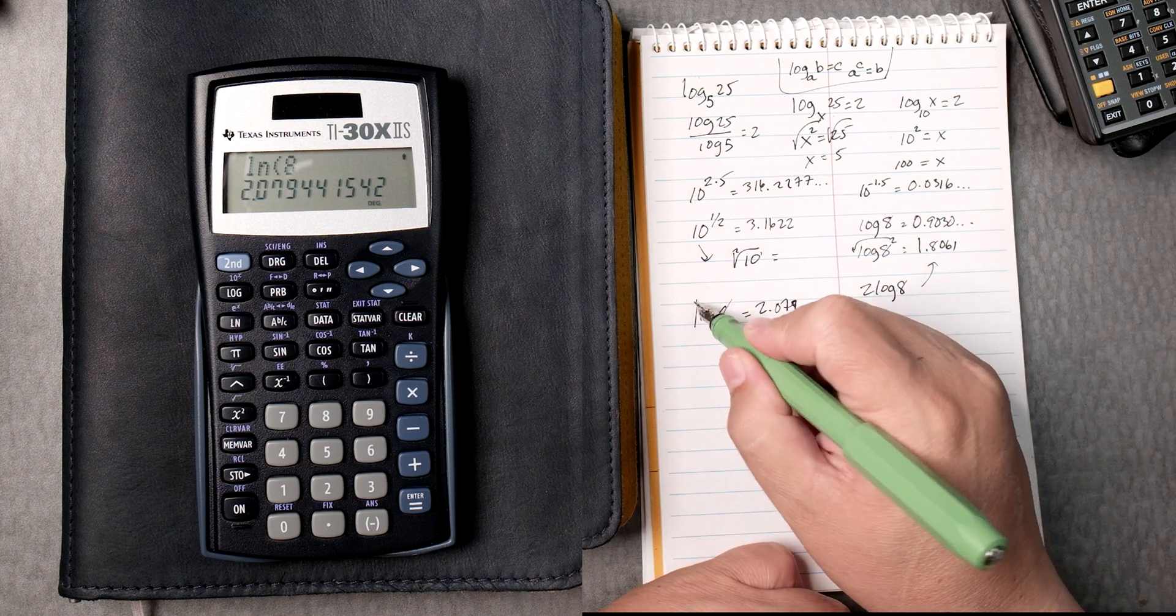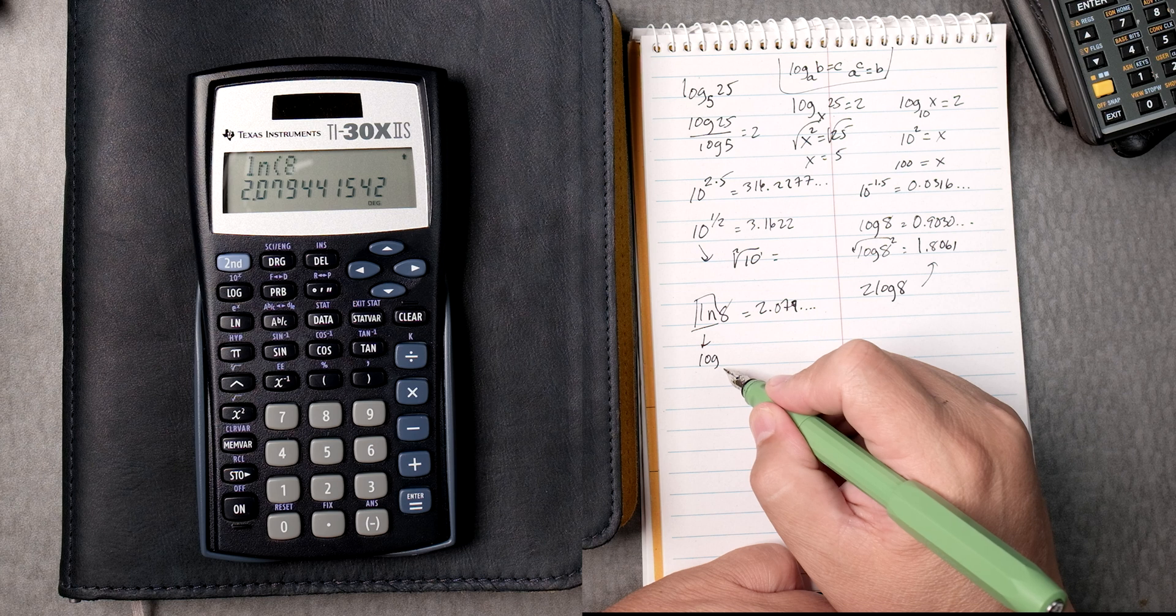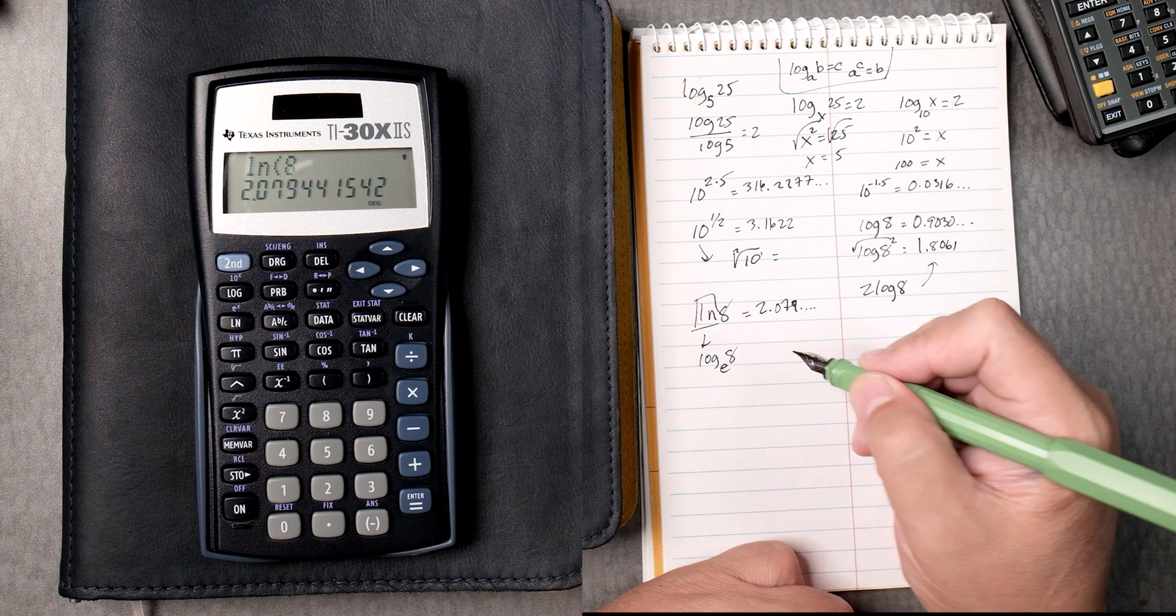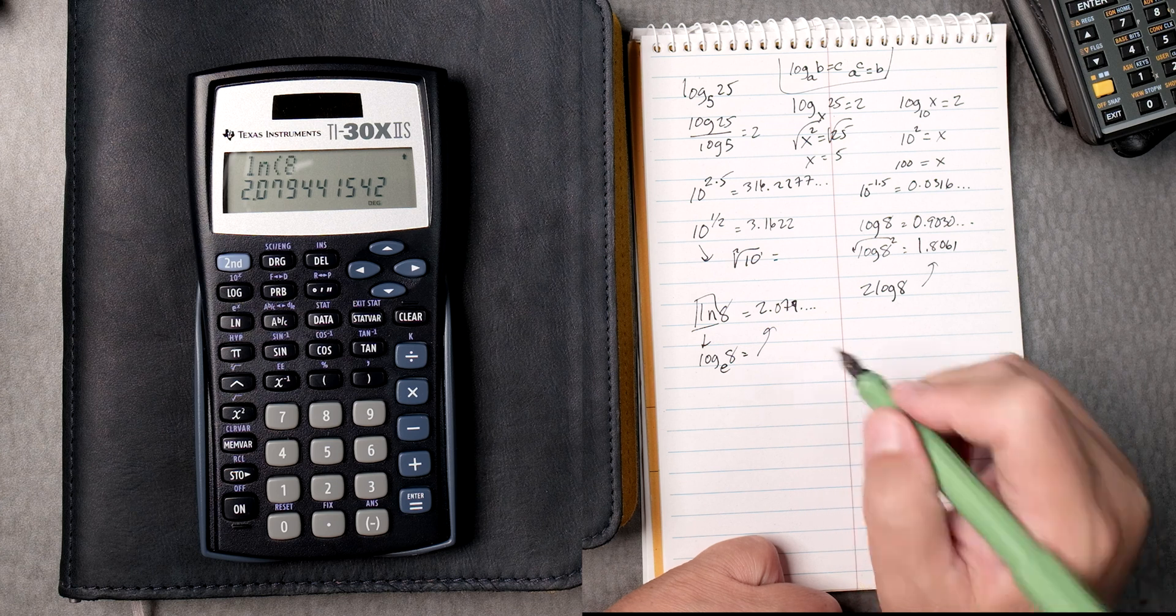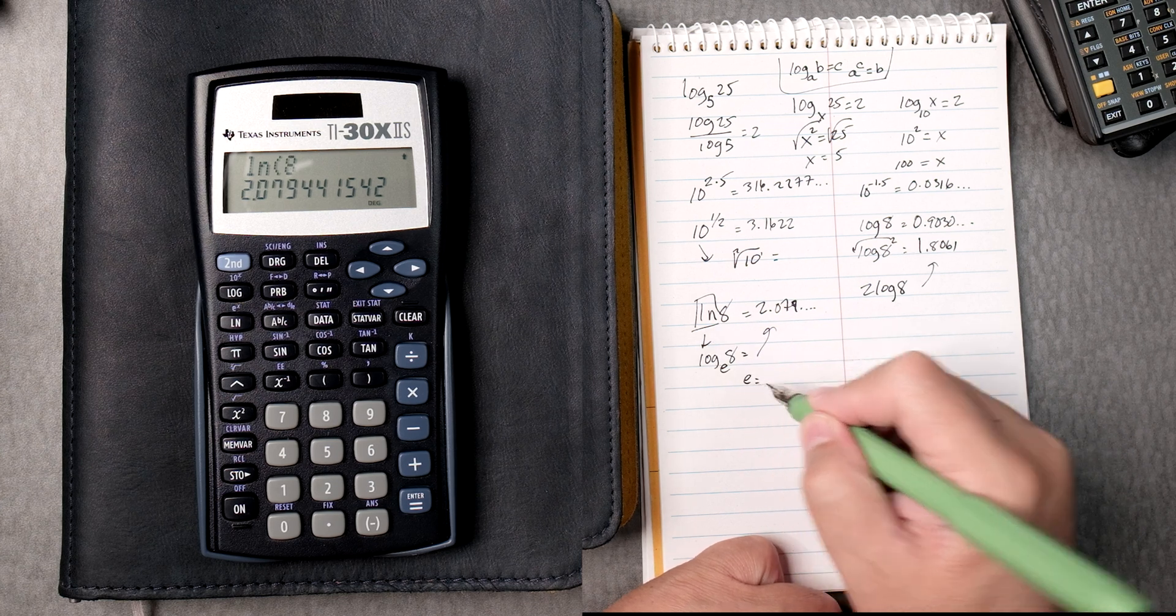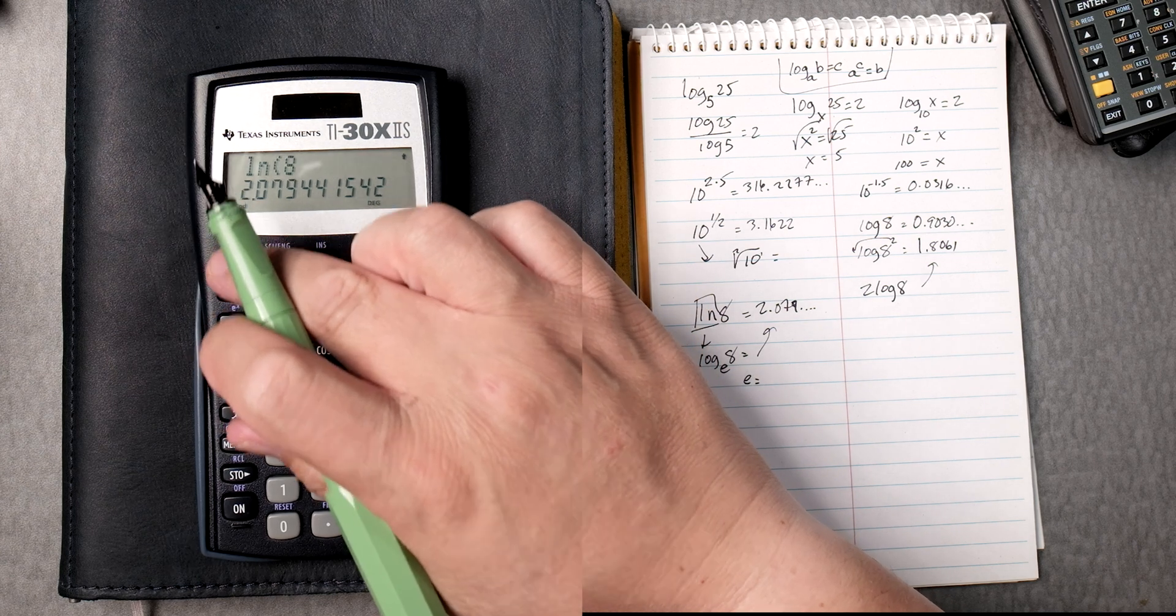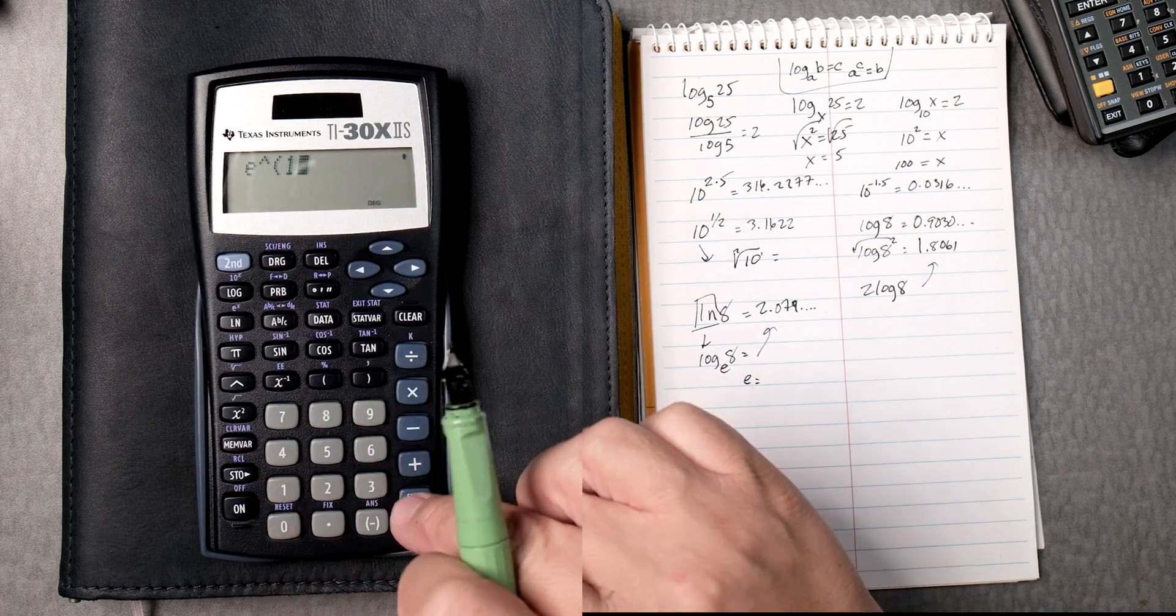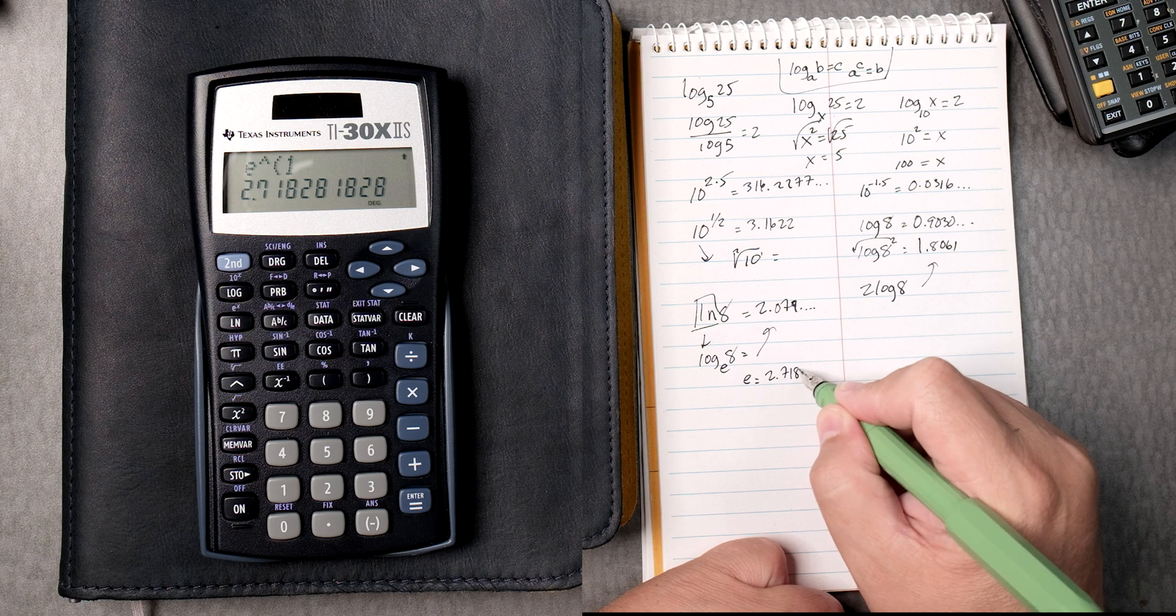Now, natural log really is the log of base e, 8. And it will give you the same answer. That's how you rewrite it. What's e? Well, if you look at the natural log key, there's e to the x. If you press second, natural log, type in a 1, it gives you the answer. 2.718 just keeps going.